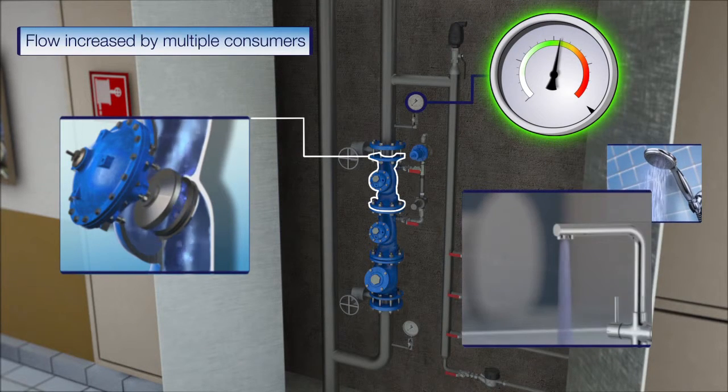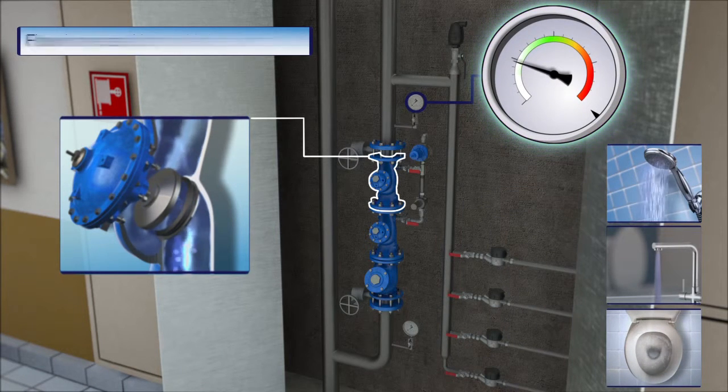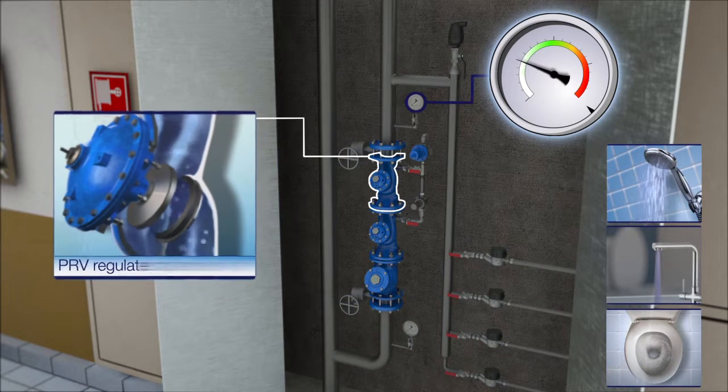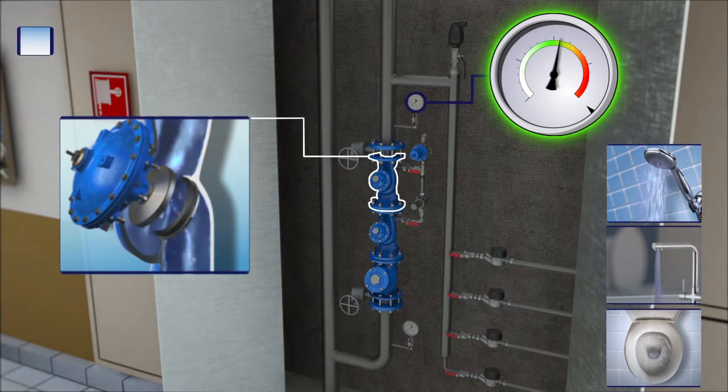In cases of high water demand, the flow rate increases dramatically and the downstream pressure plunges accordingly. The main valve increases its opening level so the downstream pressure returns to regular setting.